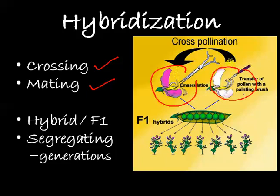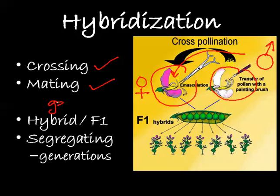In plants, the crossing is done by transferring the pollens from the anther of one plant to the stigma of the female genotype of another plant. One becomes the male parent and another becomes the female parent. This crossing between two dissimilar genotypes is called hybridization.